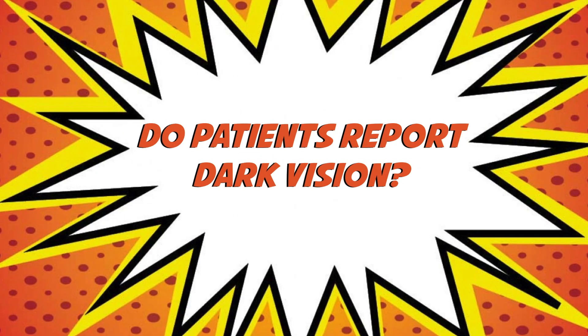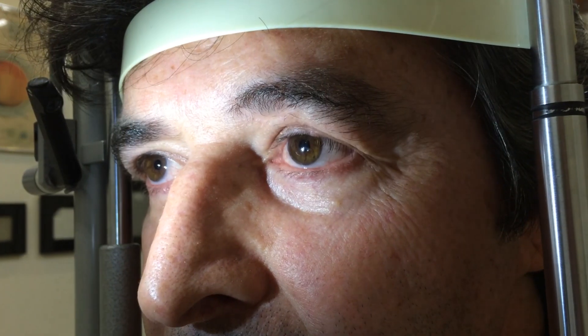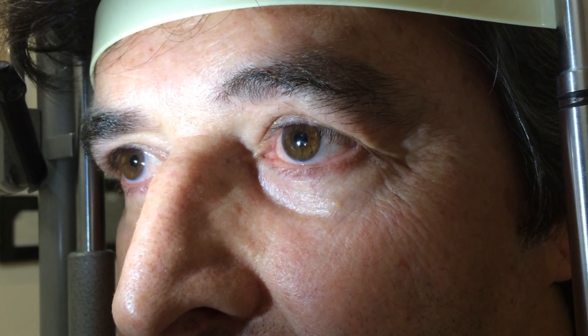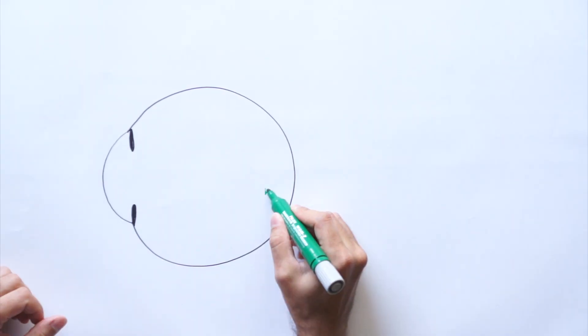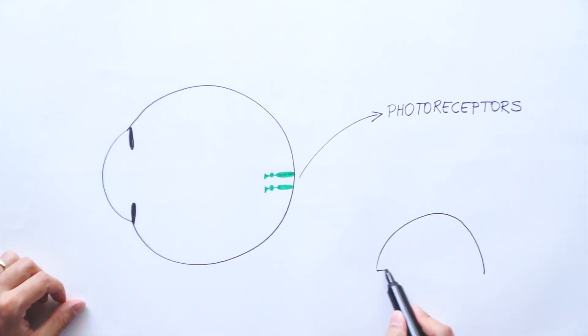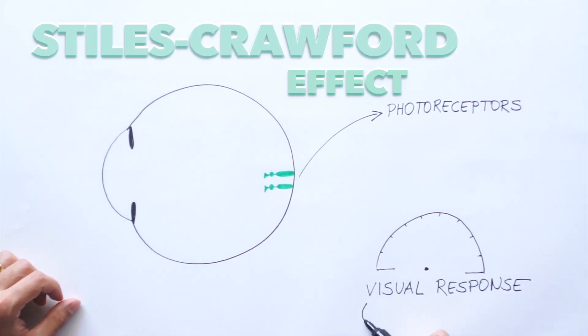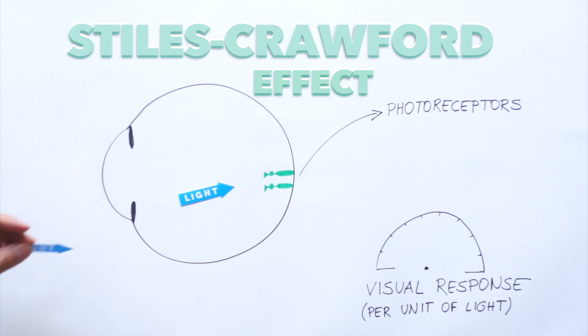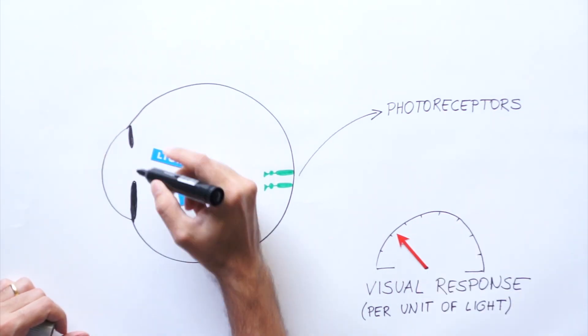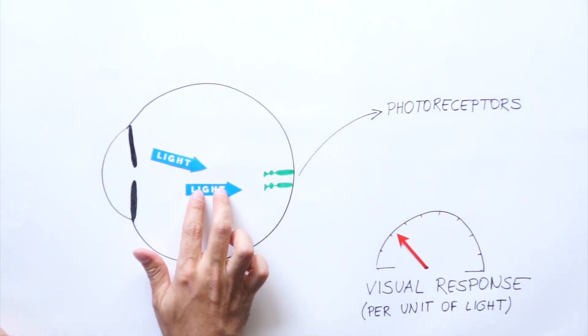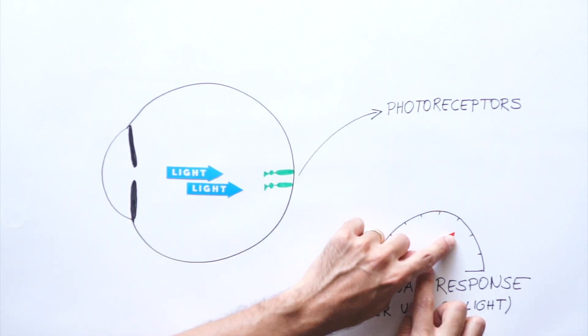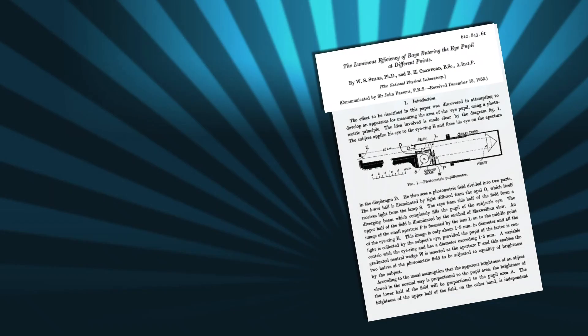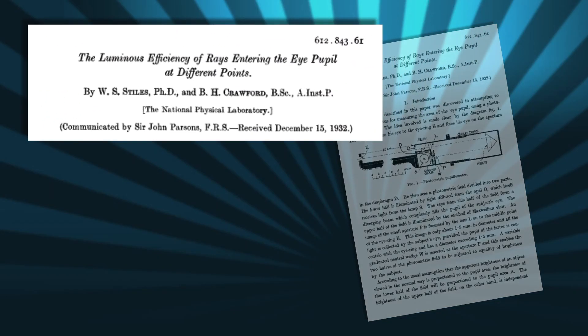Do patients report dark vision? No, this was not frequently observed. Our explanation to this unexpected low-light tolerance relies on the Stiles-Crawford effect. Going through small pupils, the light rays reach the photoreceptors in a more parallel orientation, generating a stronger visual response per unit of light energy. Therefore, despite the reduction of light entrance, the luminous energy is better utilized.